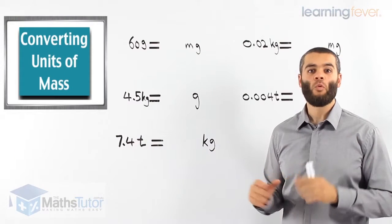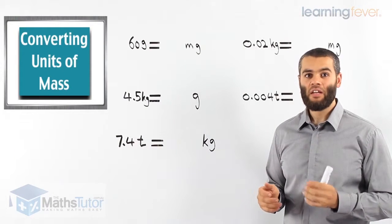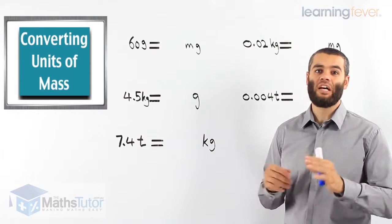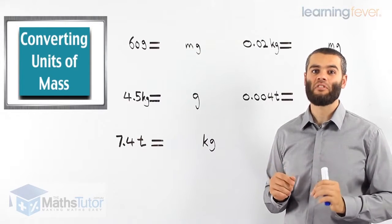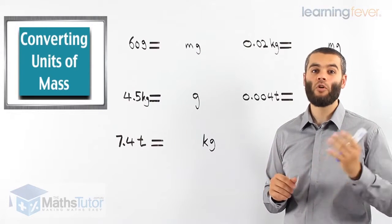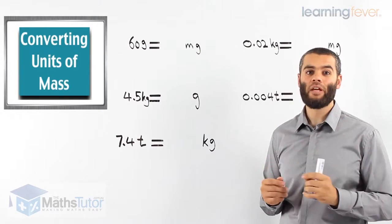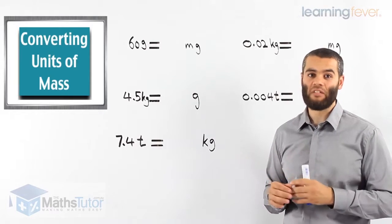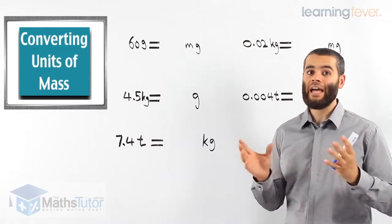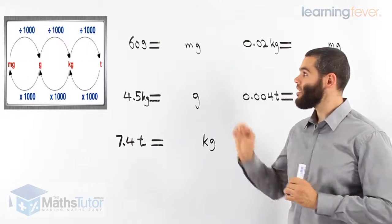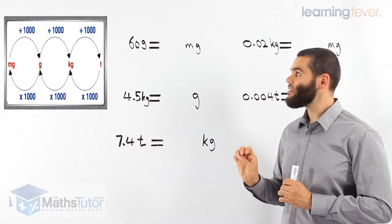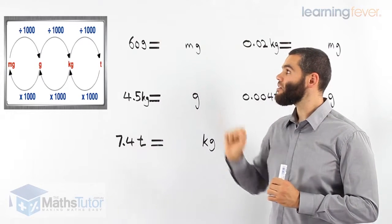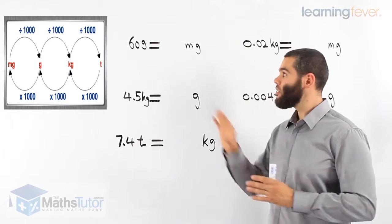Converting units of mass. We're converting kilograms to tons, or tons to kilograms, or grams to milligrams, or milligrams to grams, or even milligrams all the way to kilograms. How is it done? Let's see how. We follow a simple process.